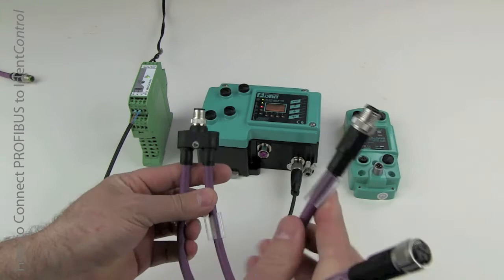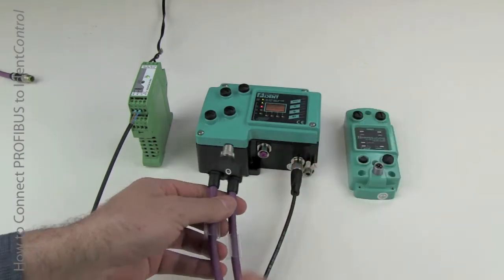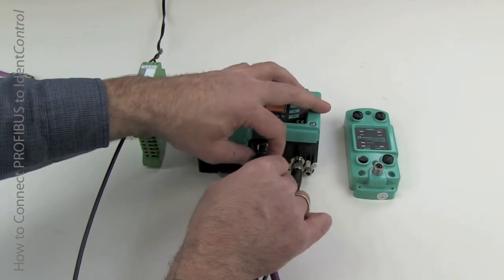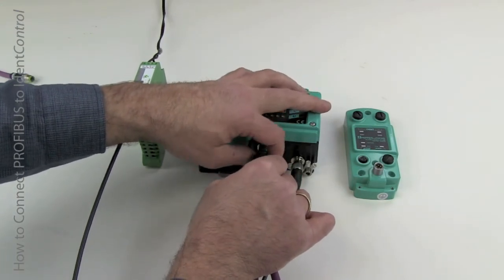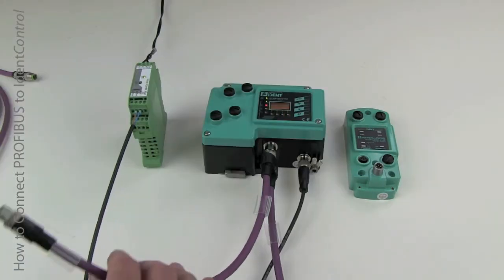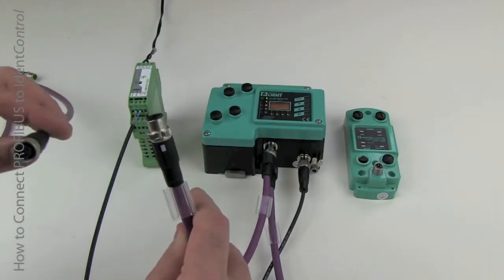Now, a little better alternative, just because it puts less stress on the trunk line, you can use a Profibus Y cable. So you, again, attach the Y directly to the controller, and then attach your trunk in and trunk out lines to the pigtails.